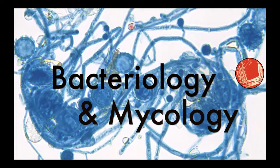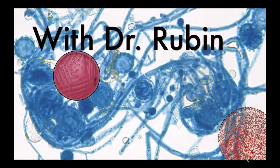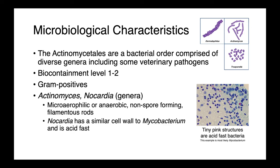In today's lecture, we're talking about the order Actinomycetales, a diverse group of bacteria that includes not only pathogens, but organisms which produce antibiotics. This bacterial order includes diverse genera, which include some really important veterinary pathogens. Throughout the order, we have organisms which are classified as either biocontainment level one or two. These are gram-positive bacteria, and we'll briefly go through some of their basic microbiological features.